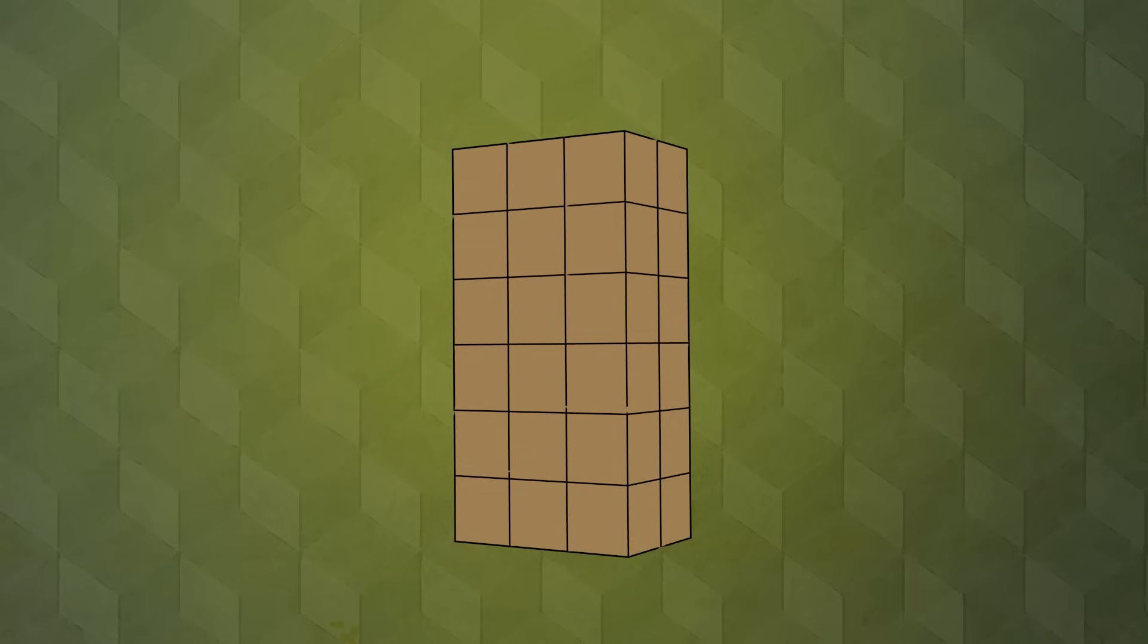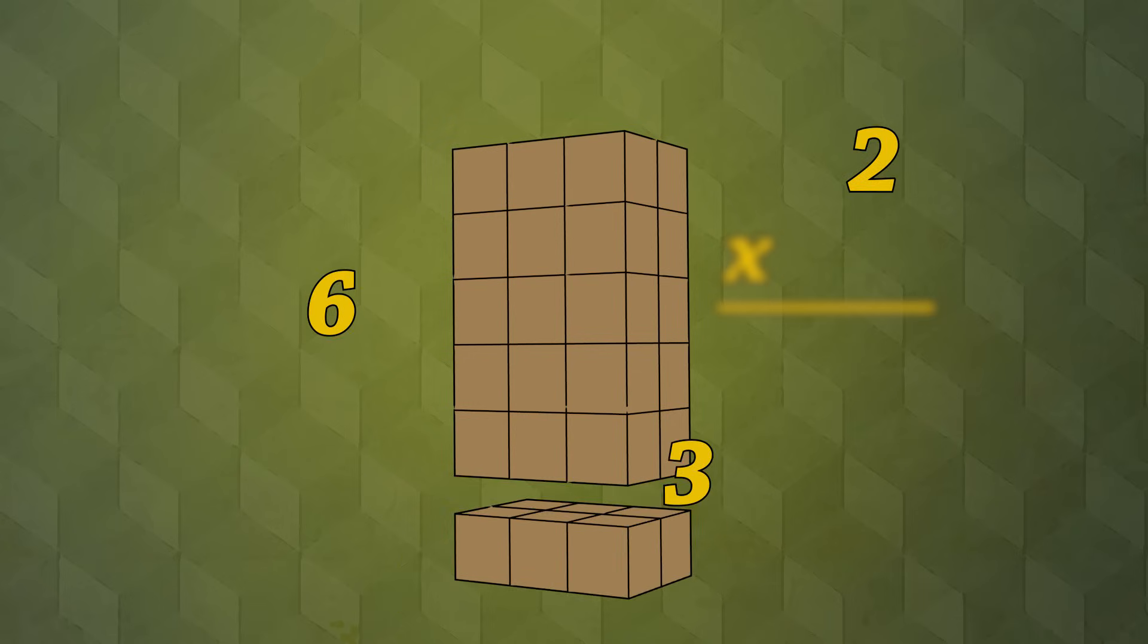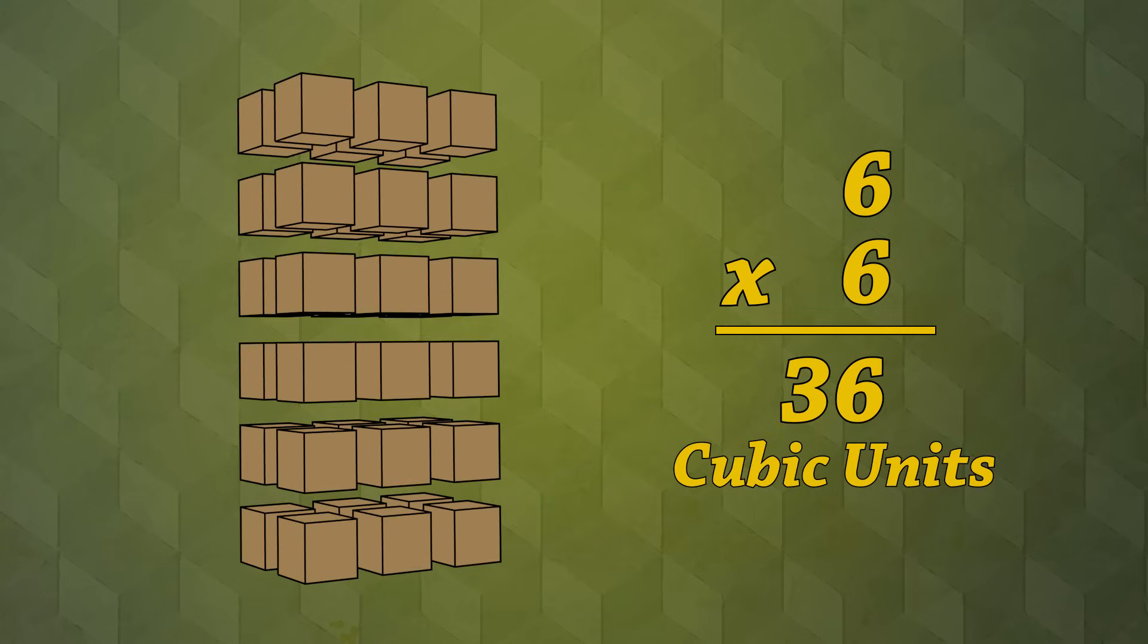With the dimensions 2, 3 and 6, first find the base, that's length times width. The base is 6 cubes, then multiply the height, 36 cubic units,